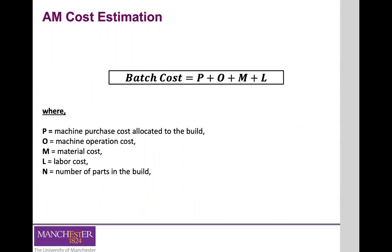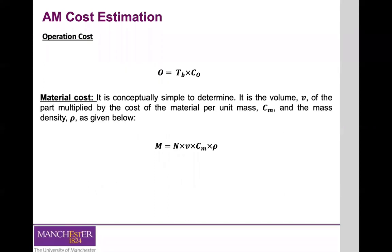When we talked about costs, we said that the costs associated with the production of parts can normally be divided into four components: the cost of the machine allocated to that specific build, plus the cost of operating that machine to build that specific number of parts, the cost of the materials — both building and support materials — and the cost of the technician operating that machine. The operation cost is calculated by multiplying the time required to build those parts by the cost rate of the machine.